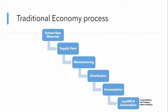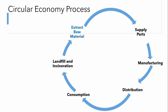So let's understand the circular economy process — how we can change this process to reduce land pollution, air pollution, and water pollution to make our planet more sustainable. In the circular economy process, we again start with extracting raw materials, creating parts, manufacturing, distribution, and consumption by users, and products still go to landfill and incineration, but here we extract some of these things from landfills to recover more raw materials.